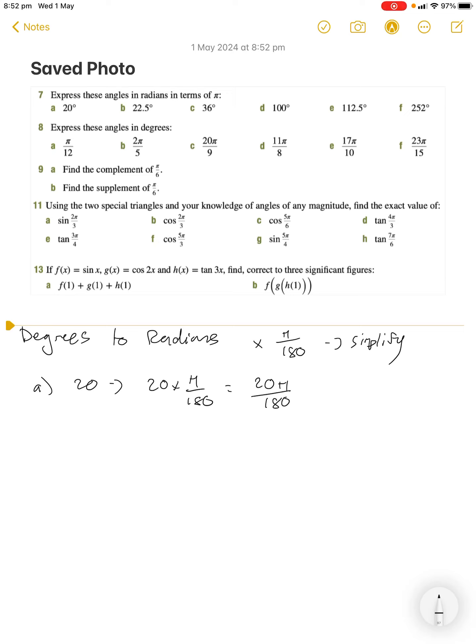As it's written here, if we type this in my calculator it's going to give me a weird number. So we want to make sure we're keeping our answer exact in terms of π. Let's simplify the fraction: 20 over 180, cross out the zeros, 2 over 18 is 1 over 9. So just π over 9.